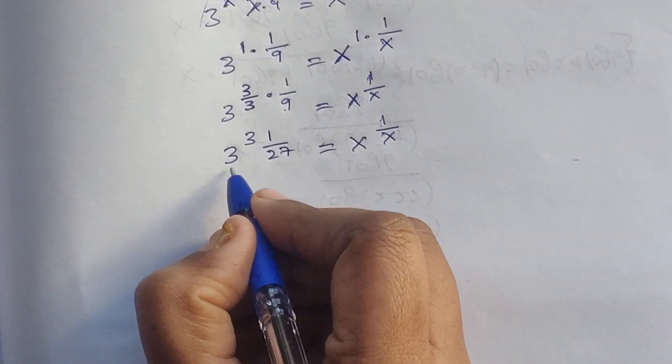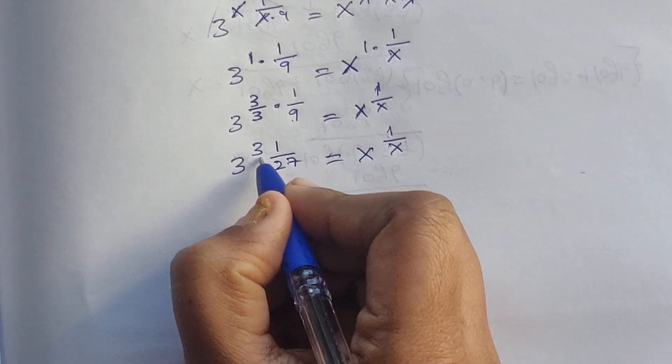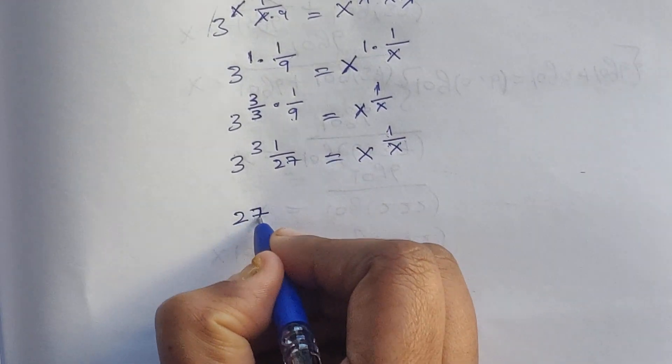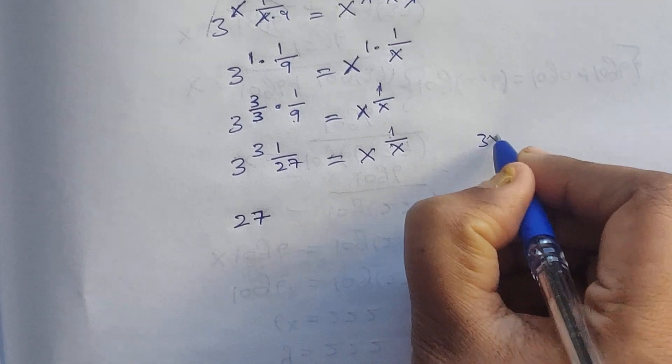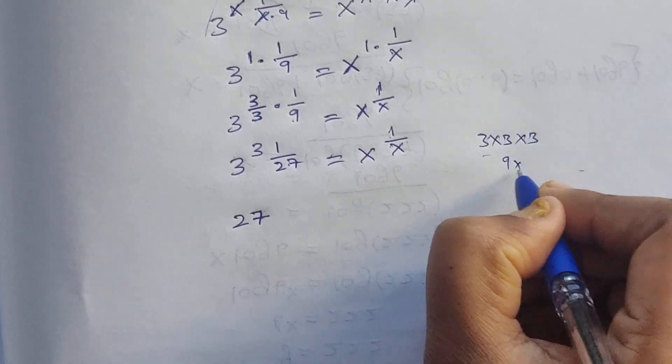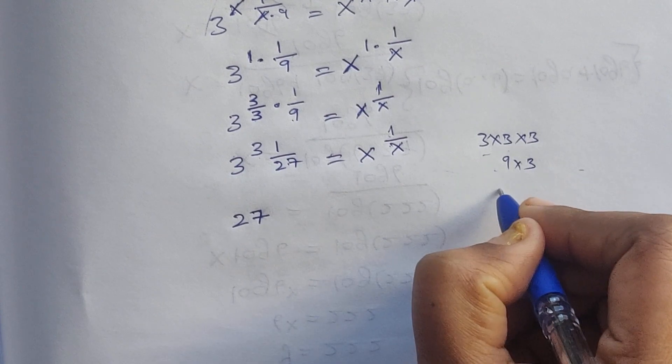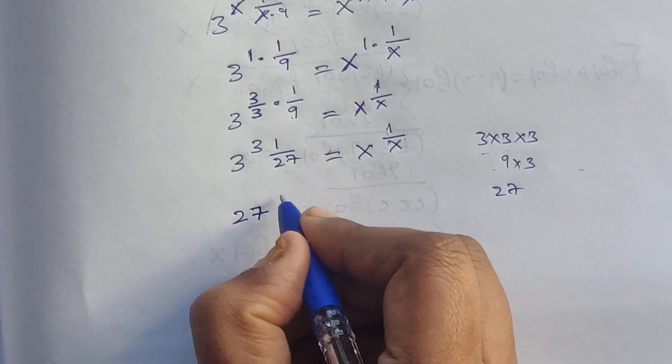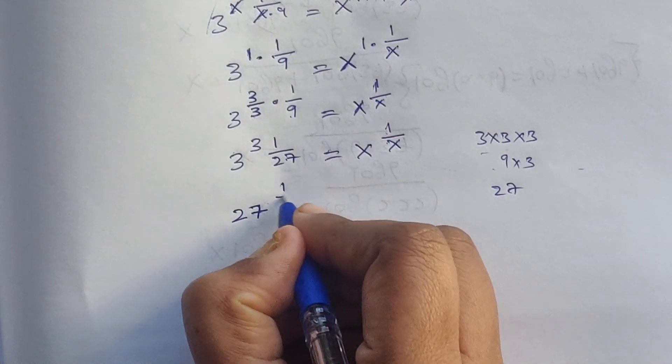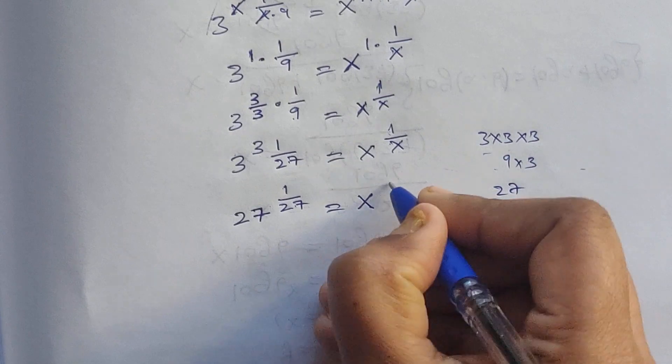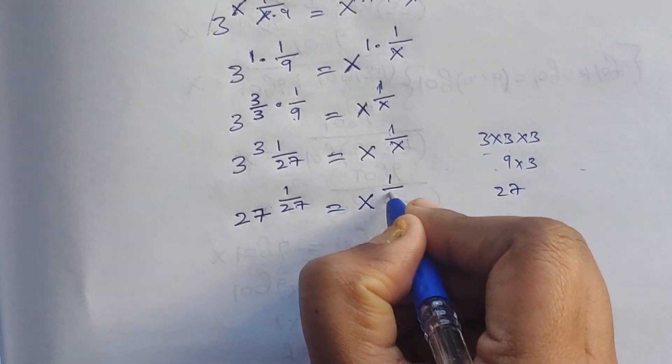Since 3 to the power of 3 is 27, calculated as 3 times 3 equals 9, 9 times 3 equals 27, we have 27 to the power of 1 divided by 27 equals x to the power of 1 divided by x.